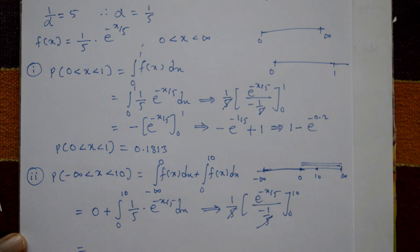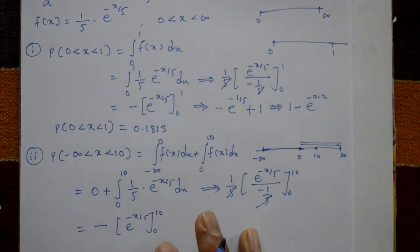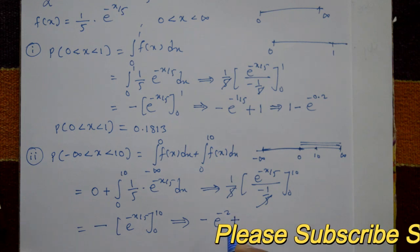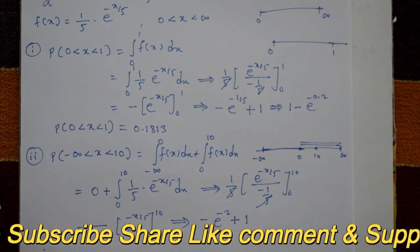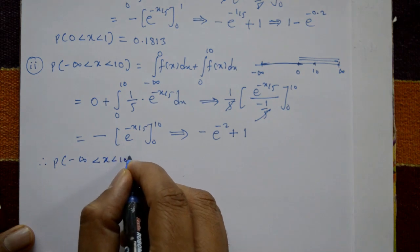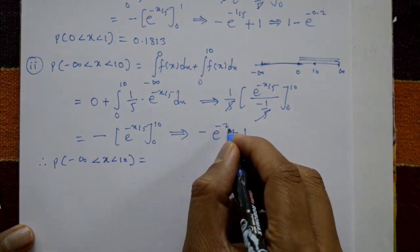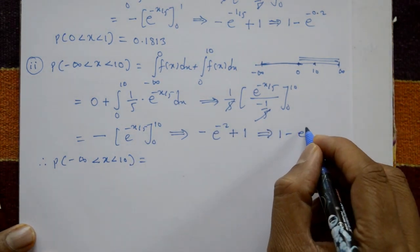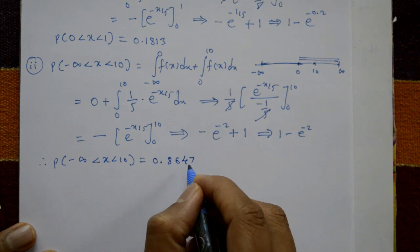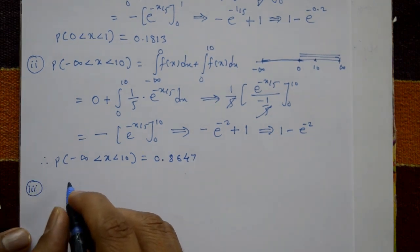After cancellation, this gives minus e raised to minus x by 5 from 0 to 10. Applying the upper limit: minus e raised to minus 10 by 5, which is minus e raised to minus 2. Minus the lower limit: plus e raised to 0 equals 1. Therefore we get 1 minus e raised to minus 2. Therefore probability of minus infinity less than x less than 10 equals 0.8647.